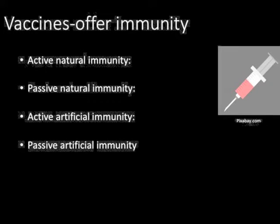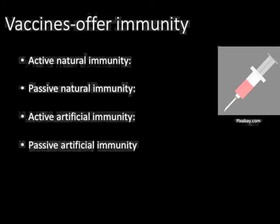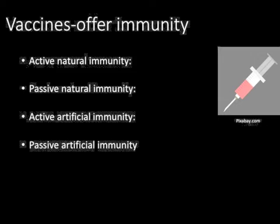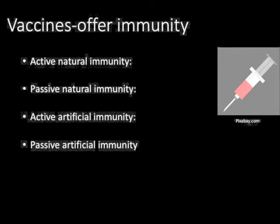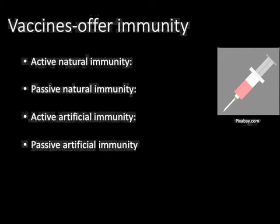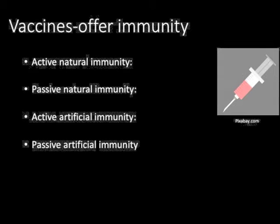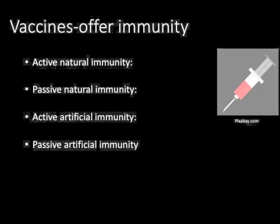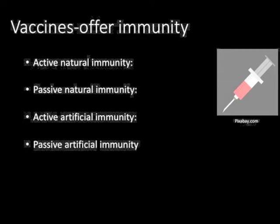With active artificial immunity, we give vaccines that stimulate invasion and antibodies are formed. An example of this is the MMR vaccine — the body develops antibodies to protect itself from future exposure to measles, mumps, and rubella.